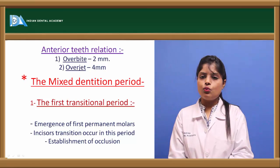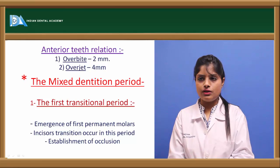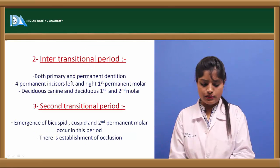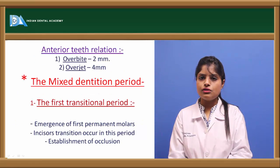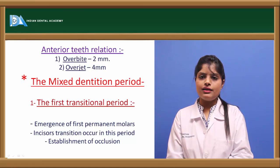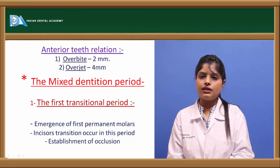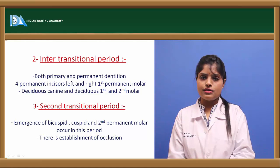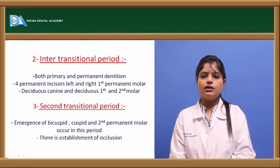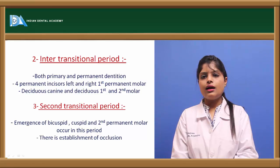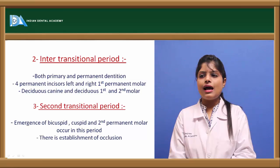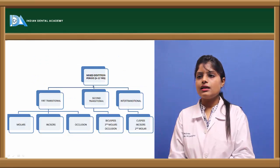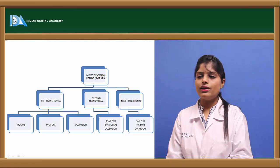The mixed dentition phase follows the primary dentition phase and is divided into the first transitional, intertransitional, and second transitional periods. The first transitional period is marked by eruption of permanent molars and permanent central and lateral incisors, replacing the primary incisors. The intertransitional phase is characterized by the presence of the first and second primary molars, the first permanent molar, and the central and lateral permanent incisors. The second transitional period involves emergence of bicuspids, cuspids, and the second permanent molar, with final establishment of occlusion.